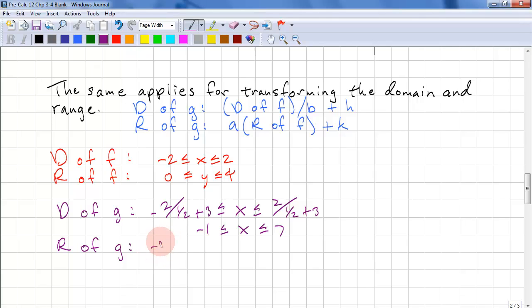The range, we have -3 times 4 plus 2. It's less than or equal to y. It's less than or equal to -3 times 0 plus 2. This gives us -10 to 2.